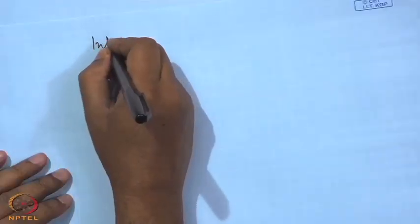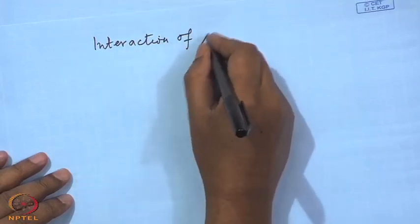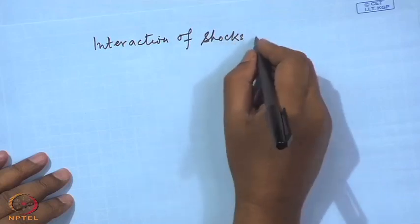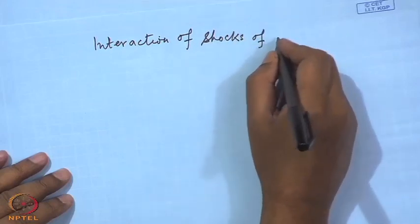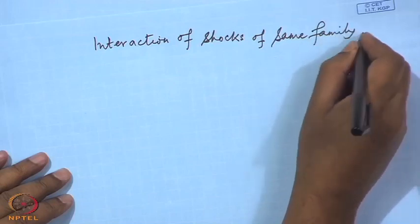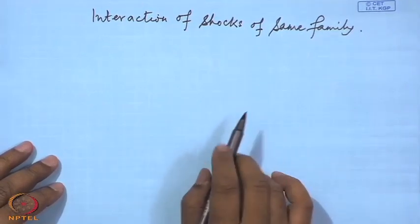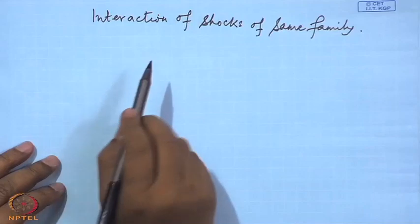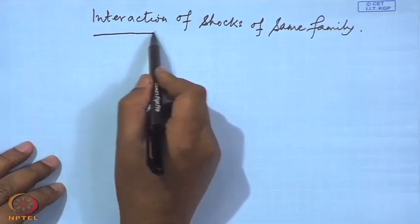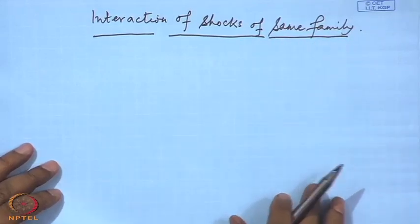Next we will consider the interaction of shocks of the same family — that is, where two shocks are interacting and both are of the same family, meaning both are either left-running or right-running. This sort of situation we have already encountered when we discussed compression by turning through successive corners.